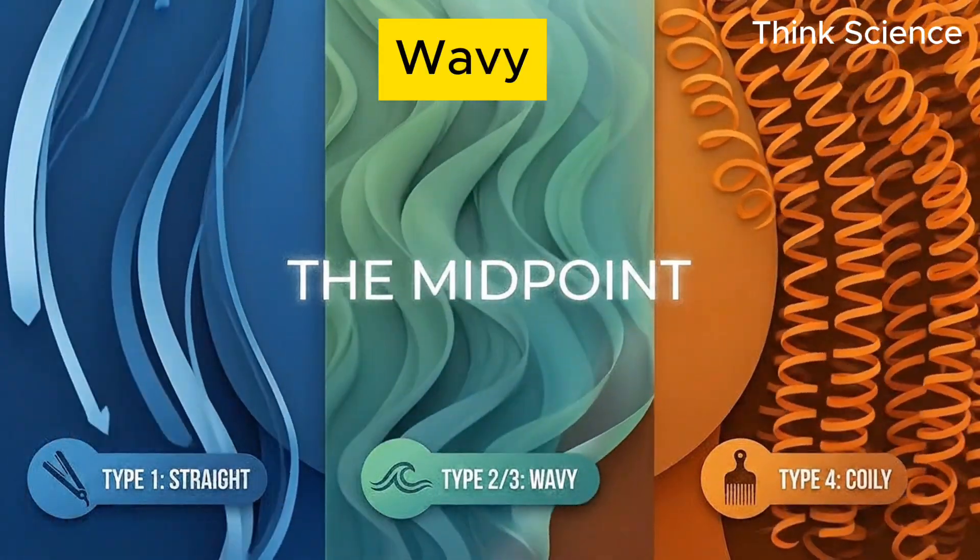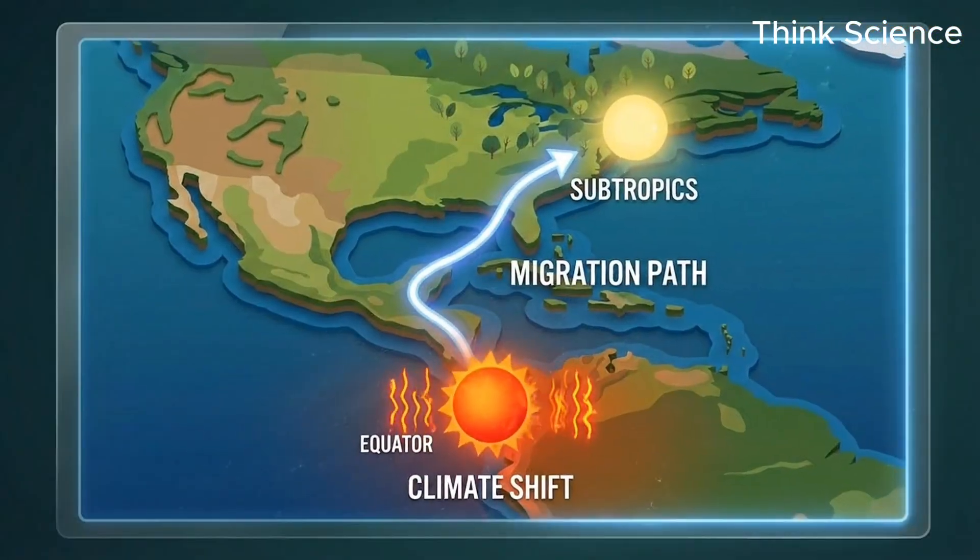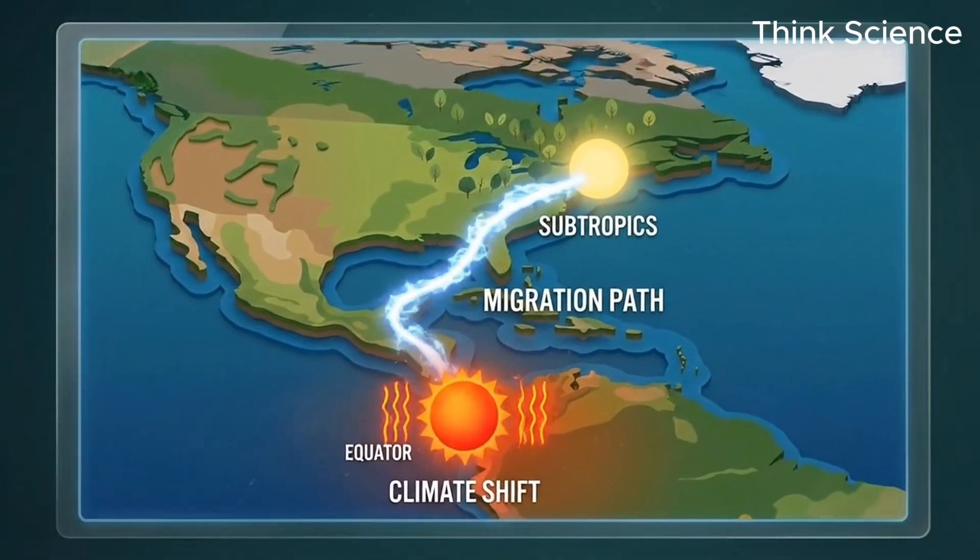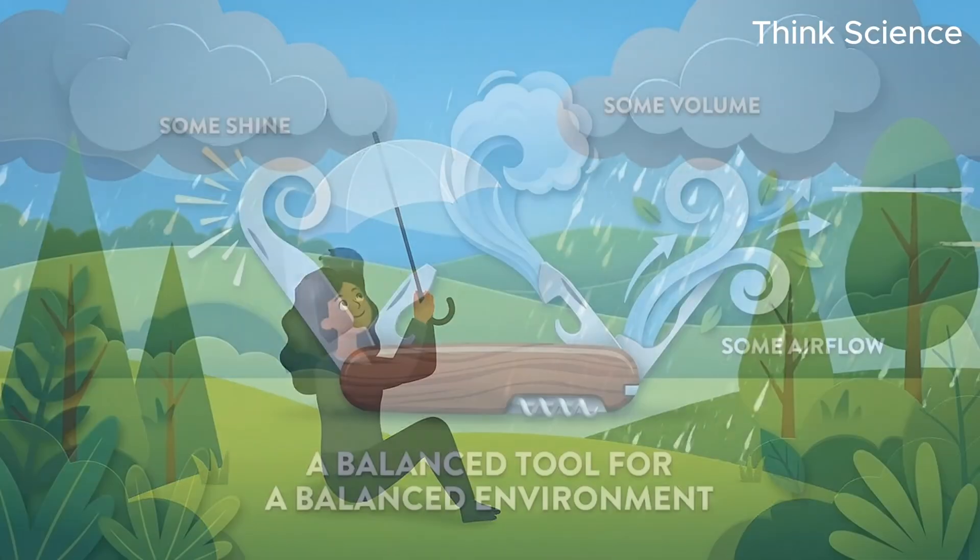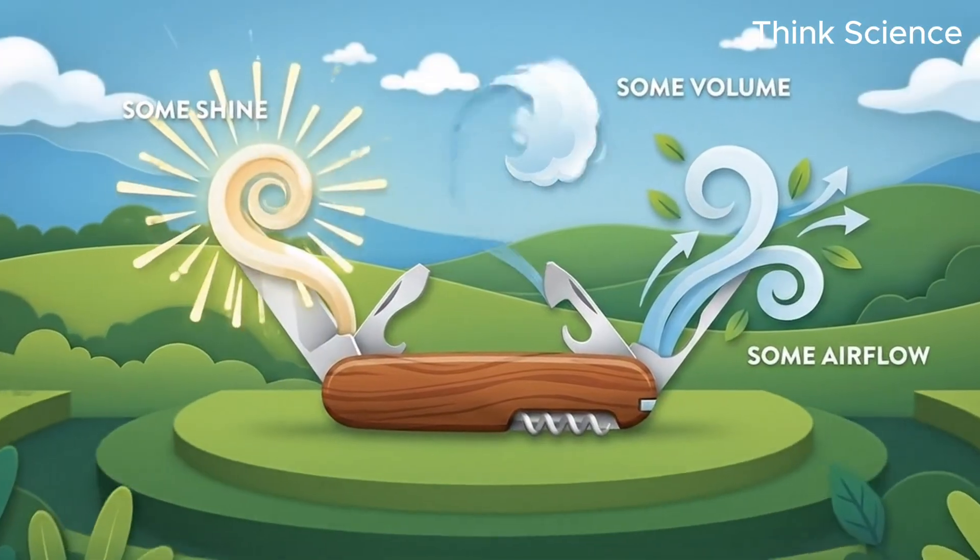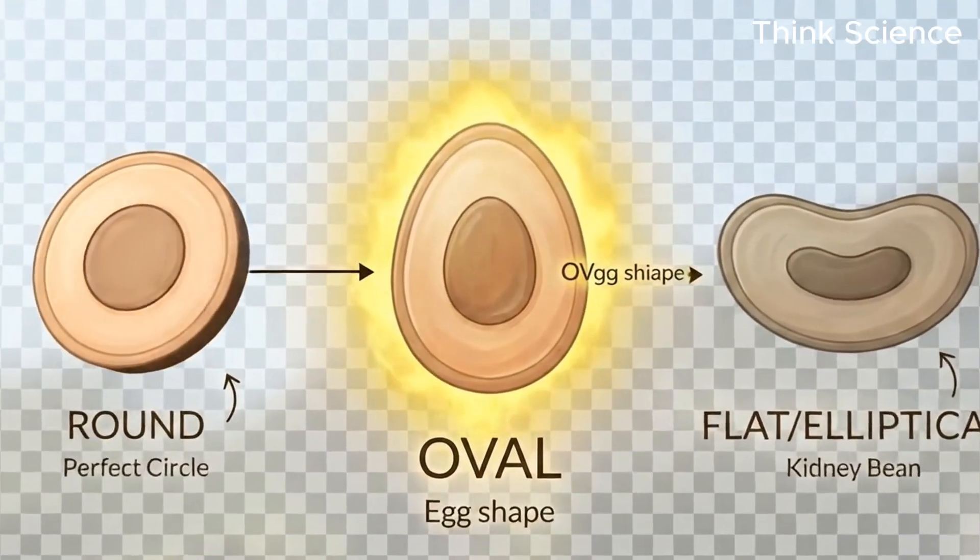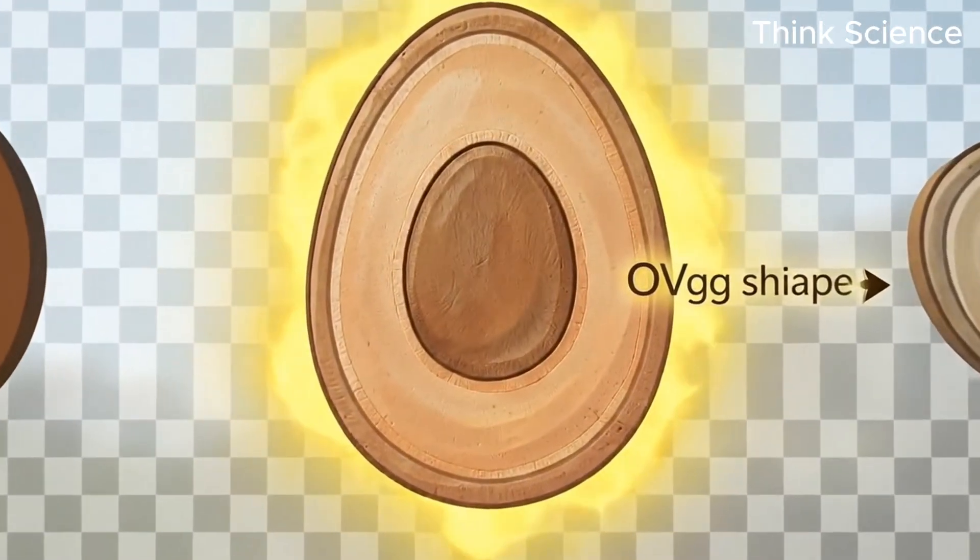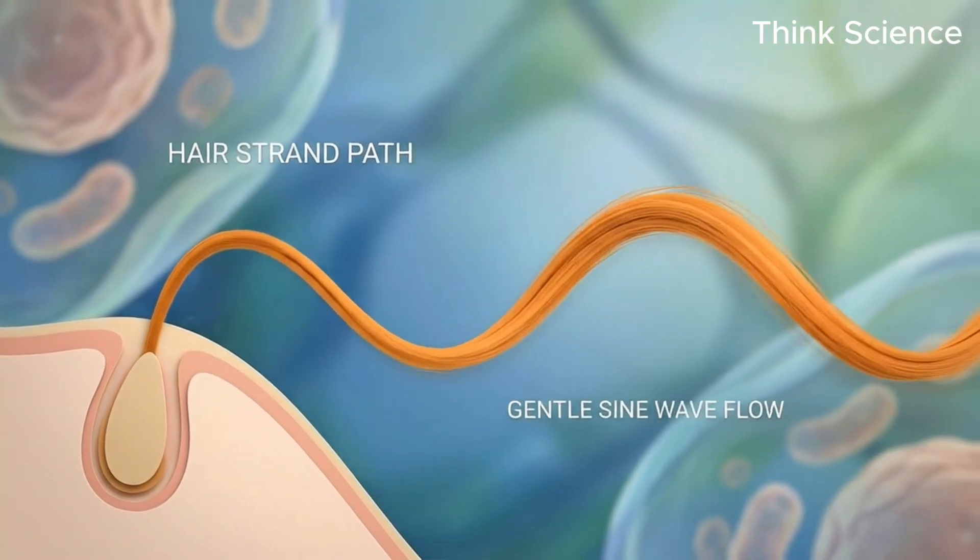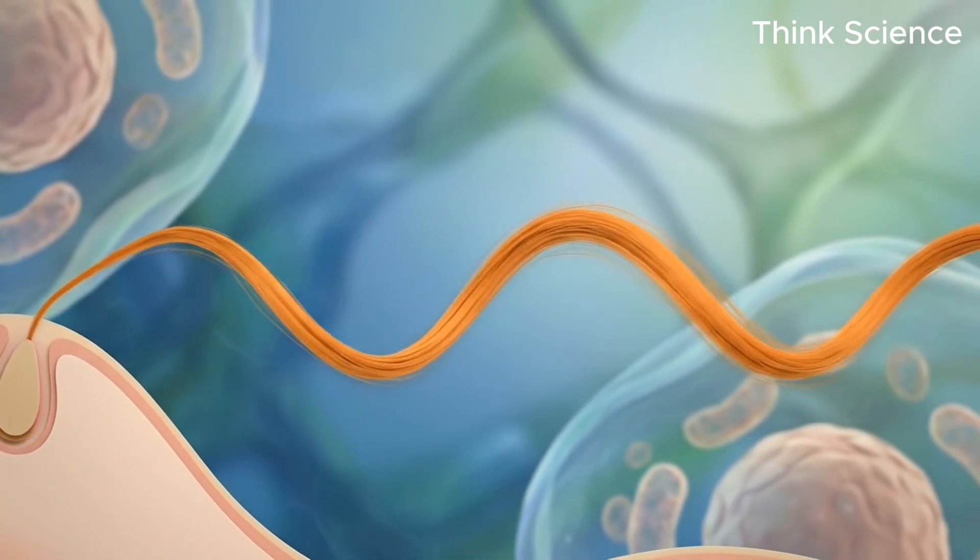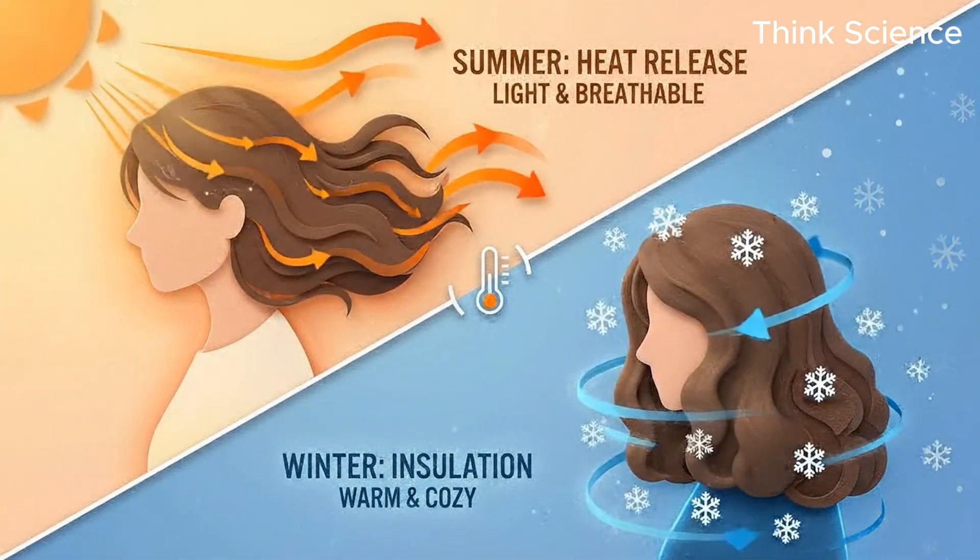Between these two extremes, we find wavy hair. Wavy hair is the evolutionary midpoint, likely emerging as human populations migrated out of extreme heat and into temperate zones, where the climate fluctuated. It is the jack-of-all-trades texture. Wavy hair grows from a follicle that is oval, not round like straight hair, and not flat like coily hair. This oval shape produces a fiber that has a natural undulation, forming a loose S pattern. This structure represents an evolutionary compromise.